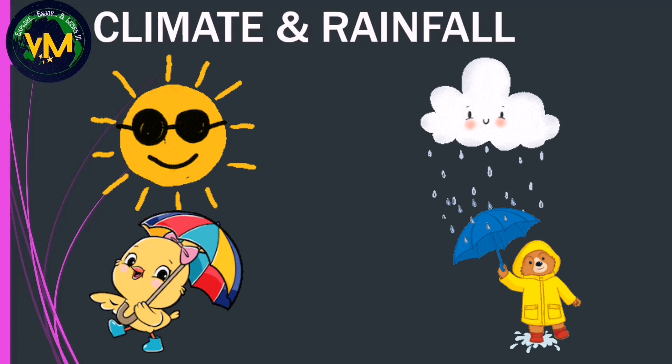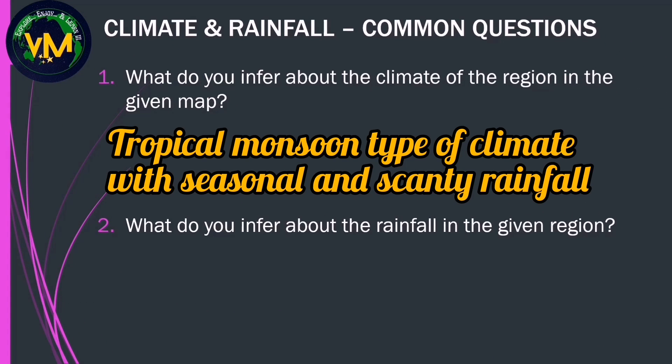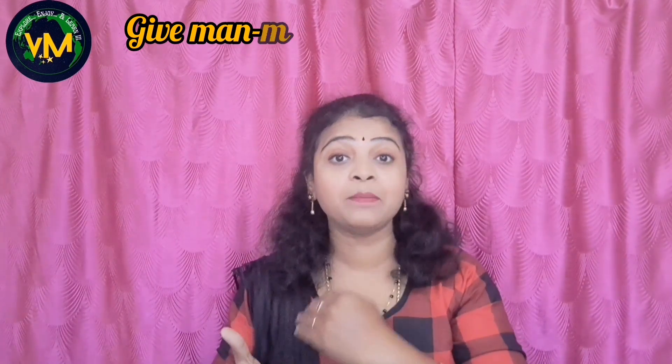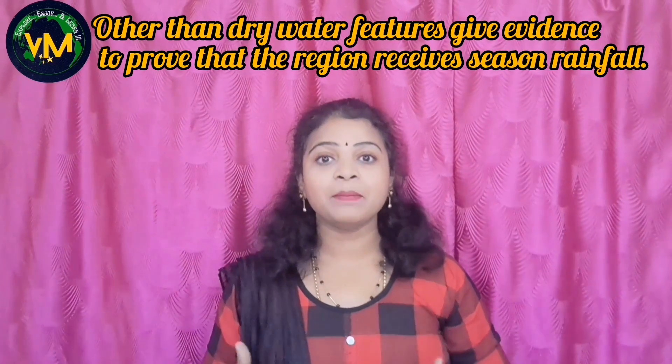Coming to the last topic: climate and rainfall. When asked about the climate of the given map, your answer should always be 'tropical monsoon type of climate with seasonal and scanty rainfall.' Specifically when asked about rainfall, it should be 'seasonal and scanty rainfall.' Evidence for scanty rainfall is open scrub. Evidence for seasonal rainfall — whichever evidence is present in the map given to you should be written. For man-made evidences you can write embankments, causeway, or seasonal canal, whichever is present in your map.